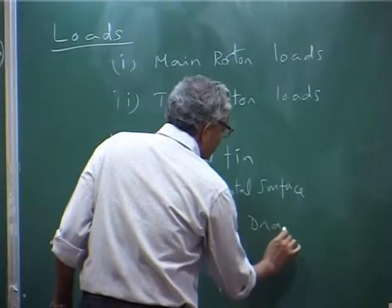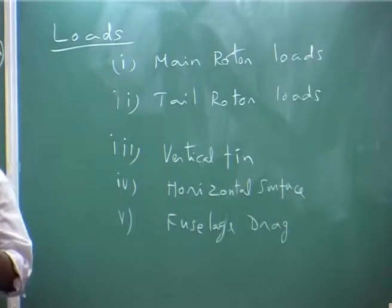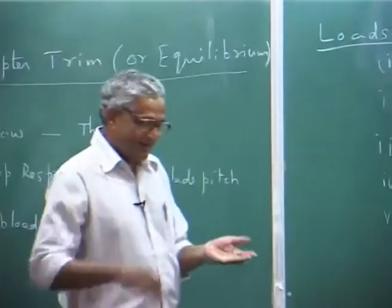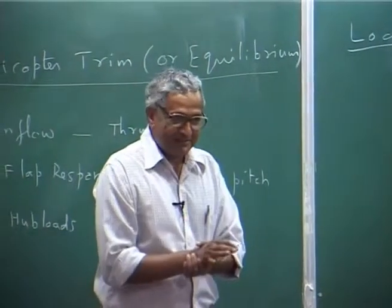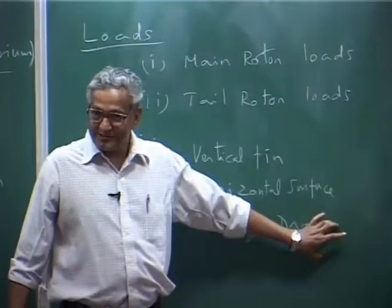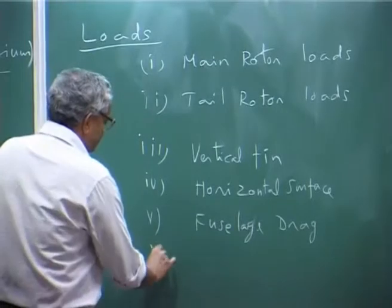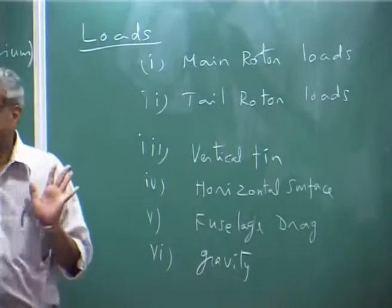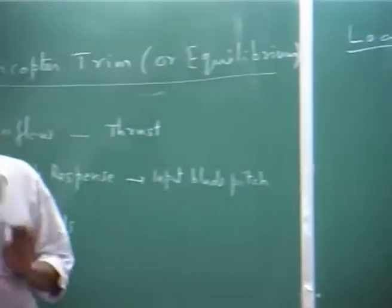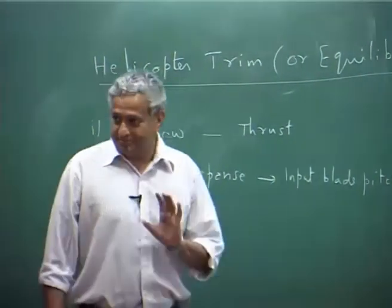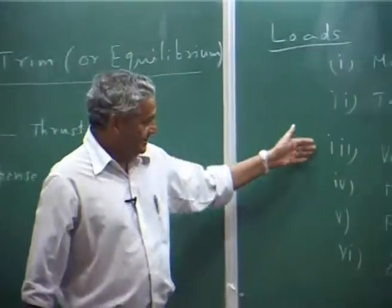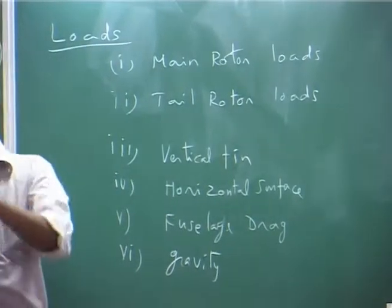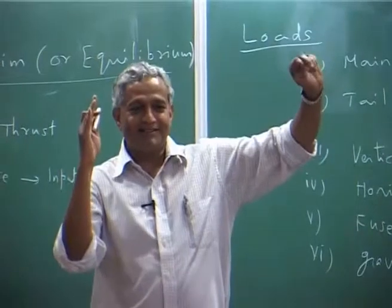Then there is fuselage aerodynamic load — fuselage drag, because we normally get only drag. If you want to do more, you evaluate the loads at different orientations and different Mach numbers. The last one is weight, which is gravity. What we obtained is only for main rotor hub loads; we do not have any of these other things. The shaft tail rotor can be mounted on a vertical fin, like a conventional aircraft, and the fin can give its own load.